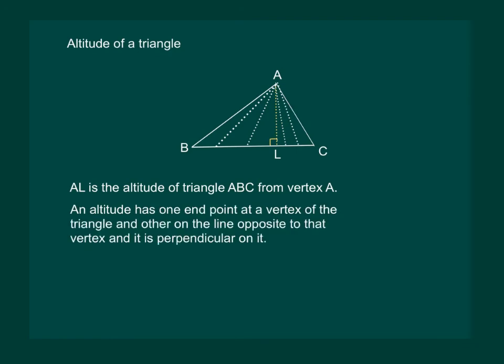Hence we can say an altitude has one endpoint at the vertex of the triangle and the other endpoint on the line opposite to that vertex, and it is perpendicular to this opposite side.